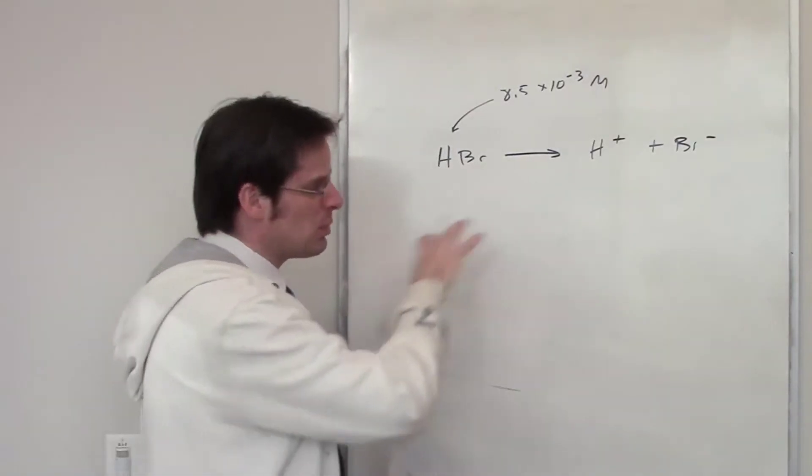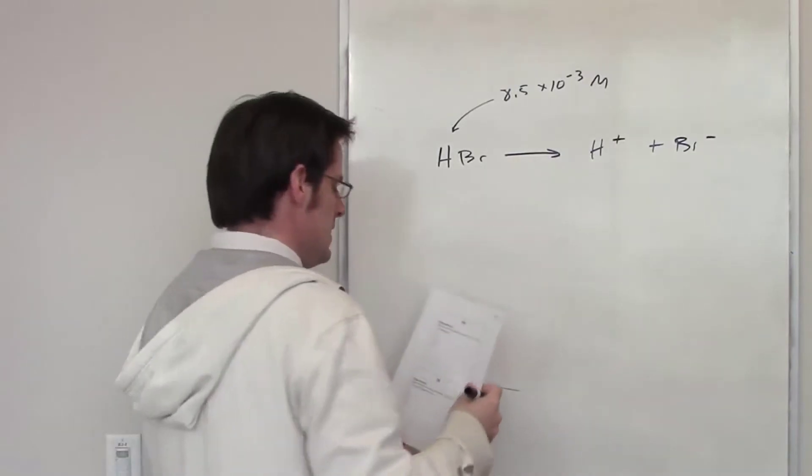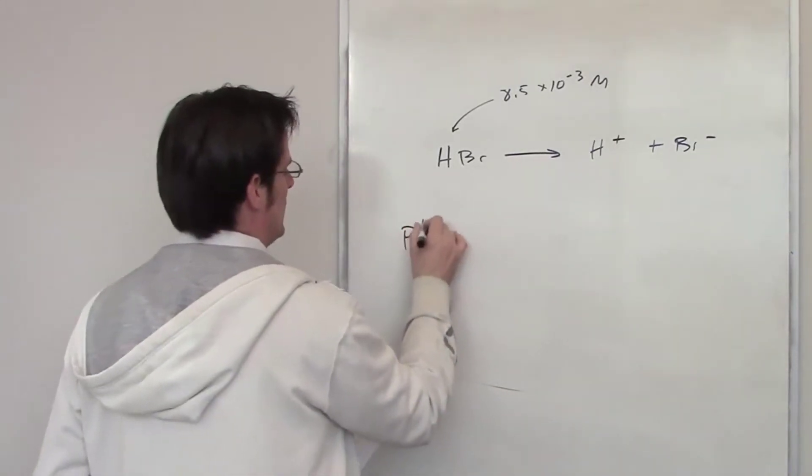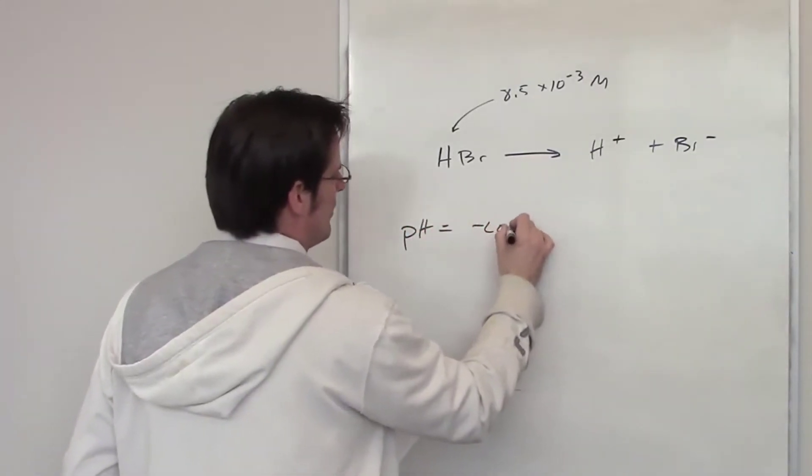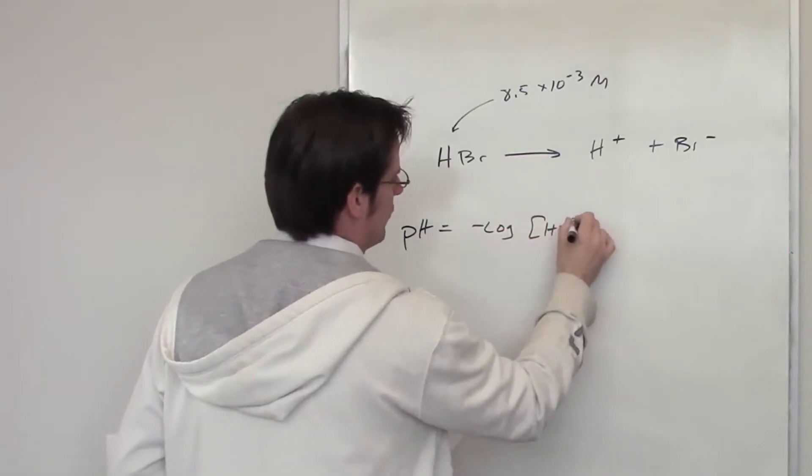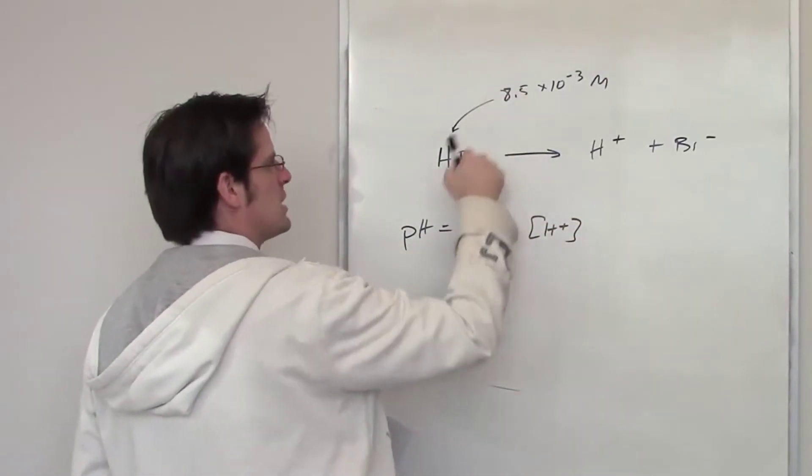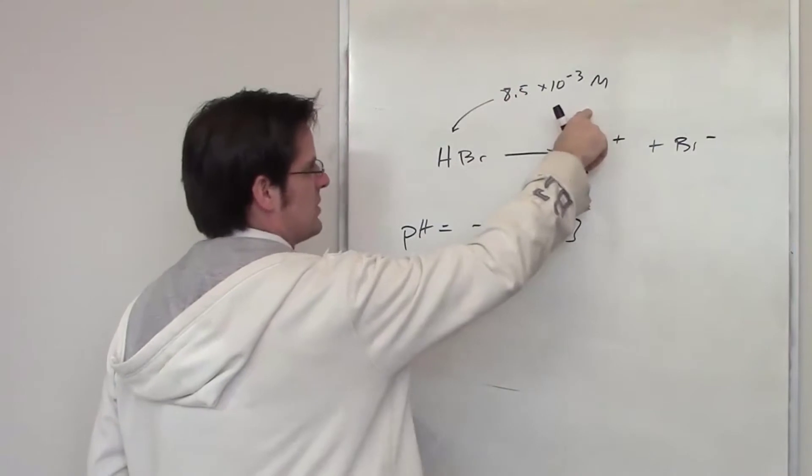pH is equal to the negative log of the concentration of H+. Now the concentration of HBr is this - as soon as I throw it into water it dissociates completely, 100%, to form H+ and Br-.